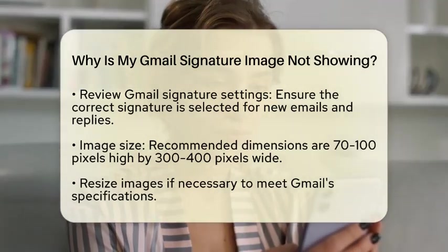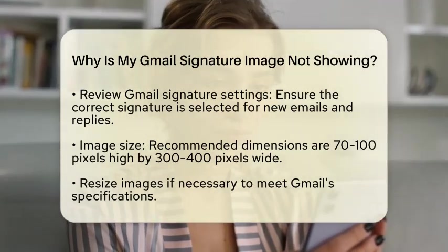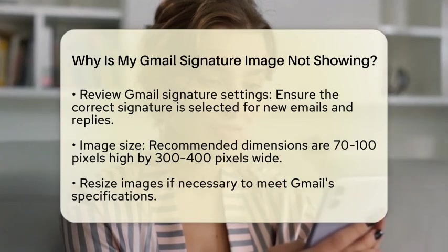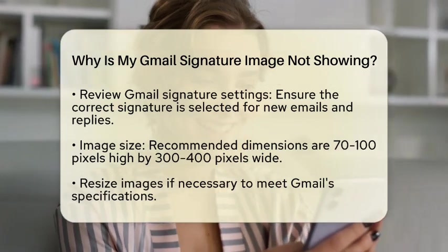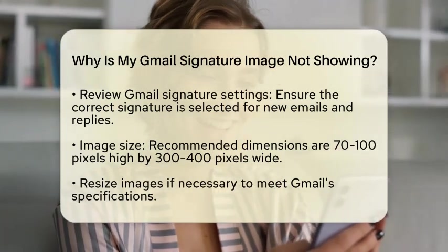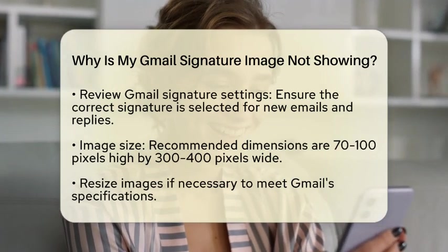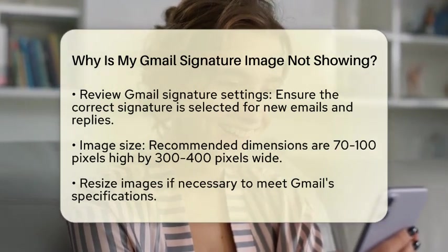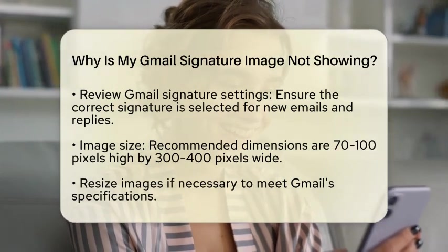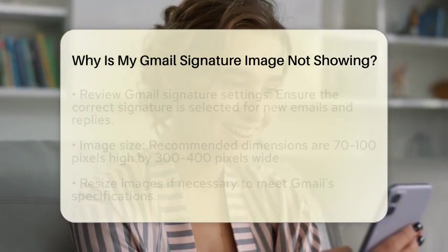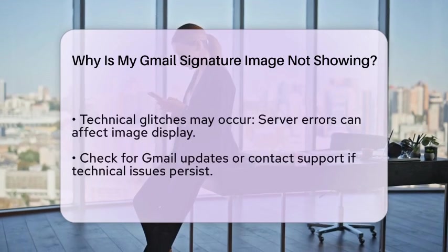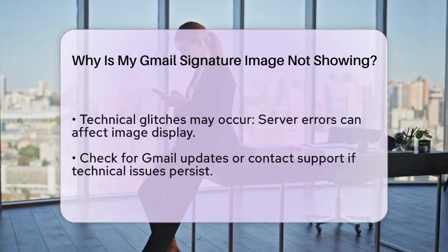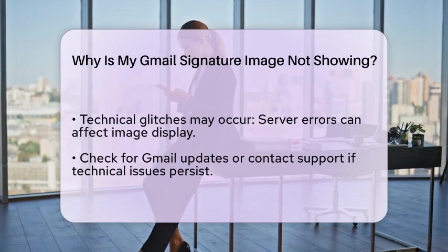Image size and formatting are also important. Gmail recommends a signature image size of 70 to 100 pixels high by 300 to 400 pixels wide. If your image is too large or not formatted correctly, it might not display. Try resizing the image before adding it to your signature.